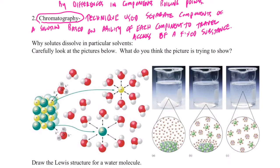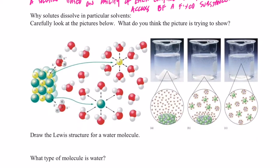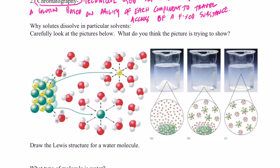All right, we're back. We just did a whole bunch of vocabulary, and we have a little bit more to do today. We'll also have another demonstration at the end of this video. I want to ask today: why do certain solutes dissolve in particular solvents? You know what the terms solute and solvent mean, so I want to know why some solutes dissolve in some solvents but not others. Carefully look at the picture below.